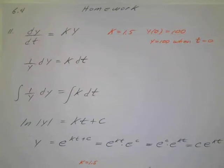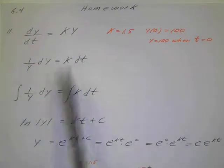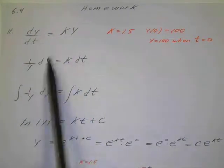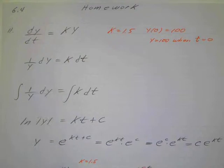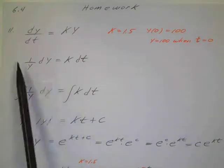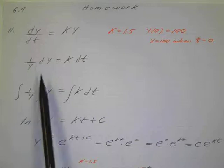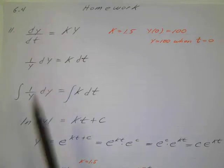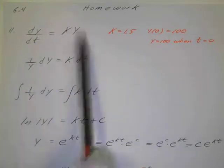So again, we'll just separate the variables here. So I've got dy, and this is going to be 1 over y. And then dt, k dt.